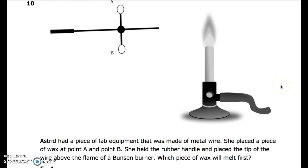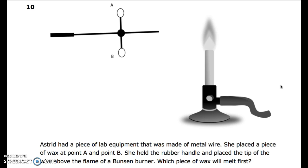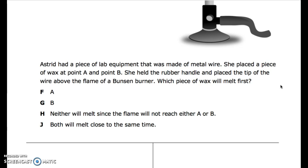Number 10: Astrid had a piece of lab equipment that was made of metal wire. She placed a piece of wax at point A and point B. She held the rubber handle and placed the tip of the wire above the flame of a Bunsen burner. Which piece of wax will melt first? F. A. G. B. H. Neither will melt since the flame will not reach either A or B. J. Both will melt close to the same time.